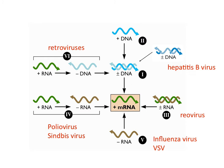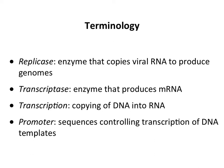The viruses we'll discuss today are shown in the Baltimore classification scheme: plus-stranded RNA viruses, negative-stranded RNA viruses, and double-stranded RNA viruses. Retroviruses get their own lecture. Some terminology: a replicase copies RNA to produce genomes; a transcriptase produces mRNA. Transcription refers to copying DNA into RNA, and a promoter controls transcription from DNA templates — these last two terms we don't really use when talking about RNA viruses.